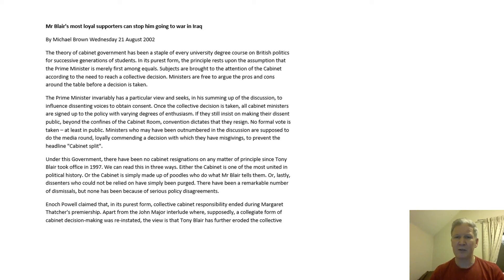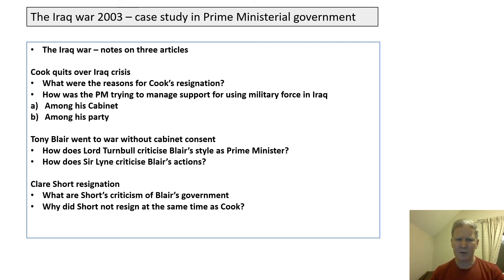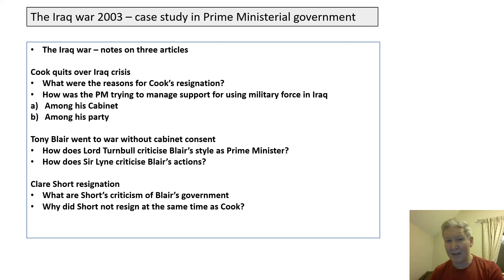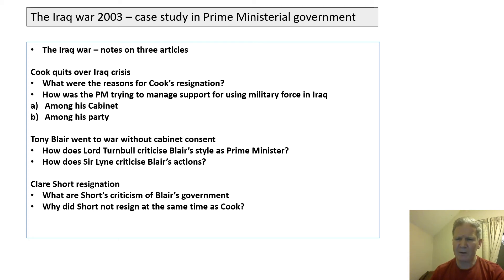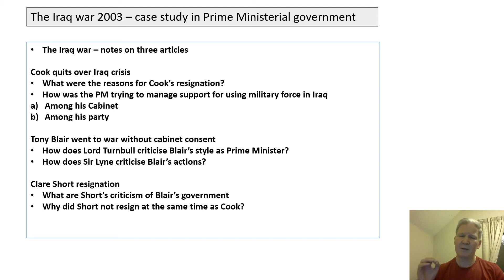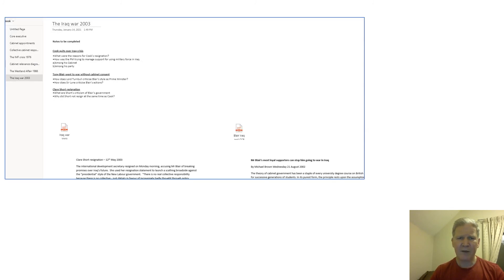For your research into the Iraq war, consider three key articles. First, Robin Cook's resignation speech, explaining why he quit over the Iraq crisis. Second, a 2011 retrospective titled 'Tony Blair went to war without cabinet consent.' Third, Clare Short's resignation, which came not at the time of the Iraq war but afterwards. All three comment on the nature of Blair's cabinet methods and how individual ministers made their decisions. The articles are PDFs sent to you — look through them and put your notes in OneNote in preparation for our seminar.